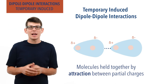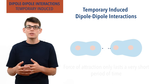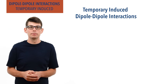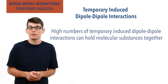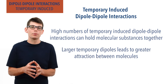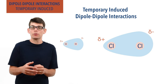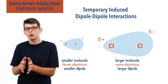As the electrons in both molecules are constantly moving, the dipoles will change and the attraction between the molecules will end. However, as new dipoles and forces of attraction between other molecules are constantly being made and broken, there are many present at any one time in a molecular substance, and their combined strength can add up to sometimes hold the substance together as a liquid or solid. The larger the dipoles, the stronger the temporary induced dipole-dipole interactions between them, giving molecular substances of larger molecules higher melting and boiling points. This is because larger molecules have more electrons in them — the size of the temporary dipole that can be created is larger, leading to stronger attraction between dipoles from different molecules and higher melting and boiling points.